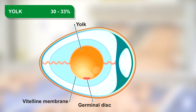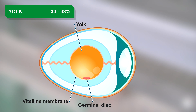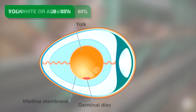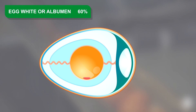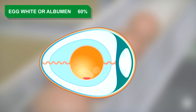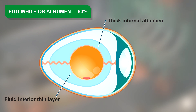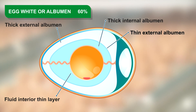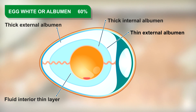Contains the germ cells, where fertilization and later embryonic development takes place. Egg white, or albumin. It represents approximately 60% of the total weight of the egg. It is composed of four layers that form the so-called albuminoid sac, whose function is to protect the yolk.